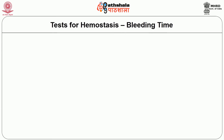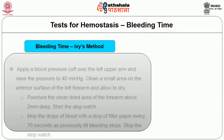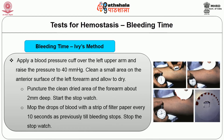Bleeding time can also be determined by the Ivy's method. Apply a blood pressure cuff over the left upper arm and raise the pressure to 40 mmHg. Clean a small area on the anterior surface of the left forearm and allow it to dry. Puncture the cleaned area about 2 millimeters deep and start the stopwatch. Mark drops of blood with a strip of filter paper every 10 seconds until the bleeding stops. Note the bleeding time on the stopwatch or count the number of drops and multiply by 10.